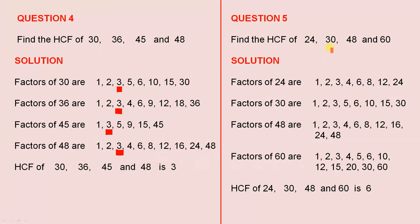Find the HCF of those 4 numbers. The factors of 24 are these numbers. The factors of 48 are these numbers. And the factors of 60 are these numbers. Let's look at the highest number that occurs in all 4 lists. Let's go for 4 — no, that doesn't occur in that one. 6 — there, there, there and there. 8 does not occur here. 12 doesn't occur there. And 24 — no. So the highest common factor of 24, 30, 48 and 60 is 6.